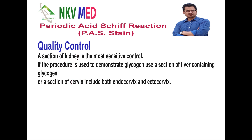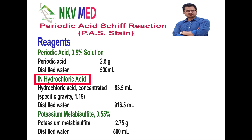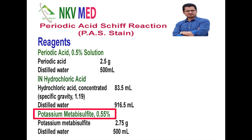For reagent preparation: first, we need 0.5% solution of periodic acid — take 2.5 grams of periodic acid in 500 ml of distilled water. Second, we need 1N hydrochloric acid — 83.5 ml of concentrated hydrochloric acid dissolved in 916.5 ml of distilled water. Third, prepare 0.55% potassium metabisulfite — take 2.75 grams of potassium metabisulfite in 500 ml of distilled water and mix.